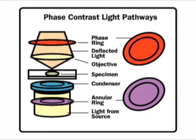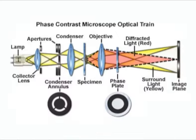This technique is based on the fact that the rate at which light travels through objects is inversely related to their refractive indices. This difference in phase due to changes in refractive index of the different components of the specimen imparts contrast to the images formed, making structures clearly visible. This microscope consists of a system of rings in the condenser and the objective.